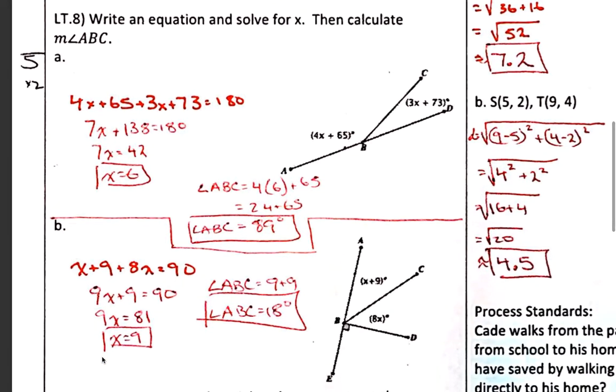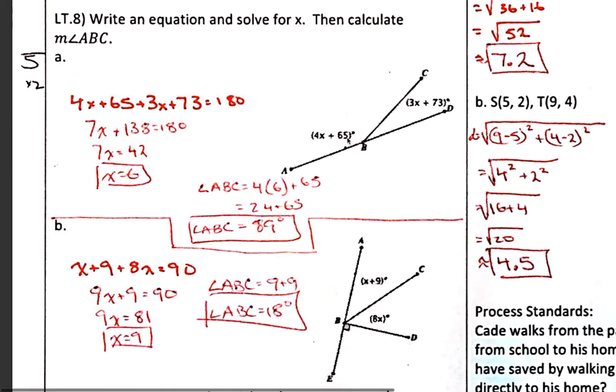All right, back to some more algebra. Here we know that these are supplementary, and so that means if we add them together, 4x plus 65 plus 3x plus 73, it should equal 180 degrees. Well, again, we've got a similar situation. We've seen this before. We add our like terms together. We get 7x, 65 plus 73 is 138. Now I've got this little two-step equation, so I subtract 138 from both sides, then I divide by 7, and I get x equals 6. I do need to solve for the measure of angle ABC, which is this one right here. So 4x plus 65. Well, if x equals 6, you've got 4 times 6, 24, plus the 65 is 89.